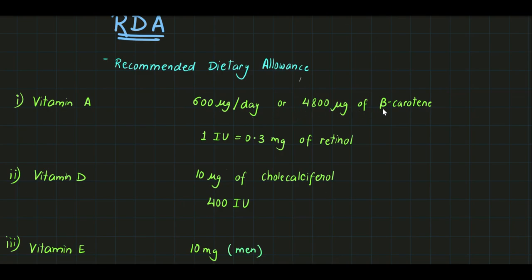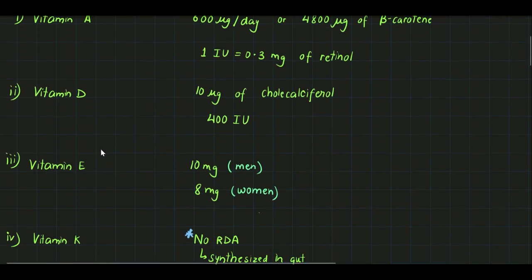4800 micrograms of beta-carotene, which is obtained from plants. One international unit is equal to 0.3 milligrams of retinol.